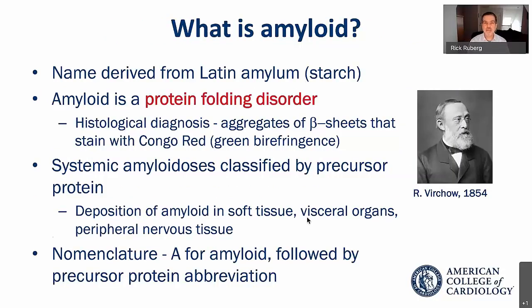Amyloidosis derives from the word amyloid, which derives from the Latin amyloem, meaning starch or starch-like. It was initially applied to human disease by the father of modern pathology, Rudolf Virchow, in the 1850s. Amyloid refers to a protein folding disorder. Dr. Virchow thought he was looking at a starch-like substance, but ultimately it was found to be protein. Any protein that takes up a particular stain called Congo red and has a characteristic green birefringence under polarized light microscopy is identified as amyloid histologically.